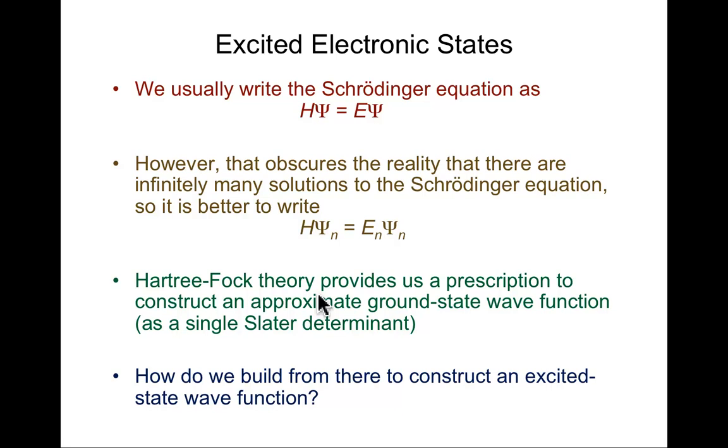Hartree-Fock theory was developed to express a wave function in a properly antisymmetric way. A simple approach, the one we looked at within the context of Hartree-Fock theory, is to build it as a Slater determinant, an antisymmetrized Hartree product of one-electron molecular orbitals. The question is, if we use that to build a ground state wave function, how might we construct an excited state wave function by reference to the Hartree-Fock ground state?